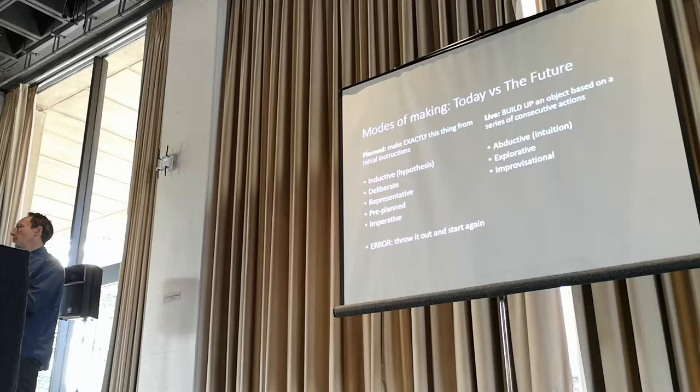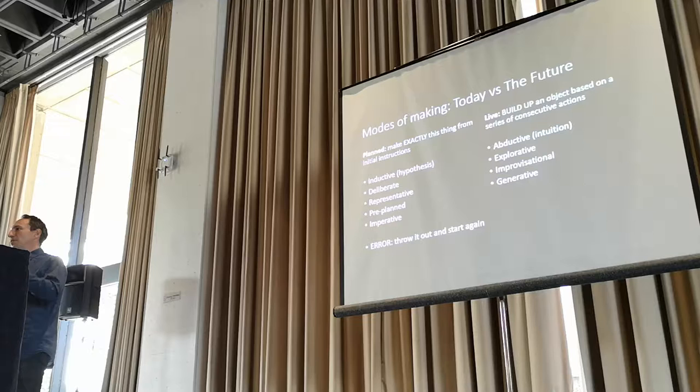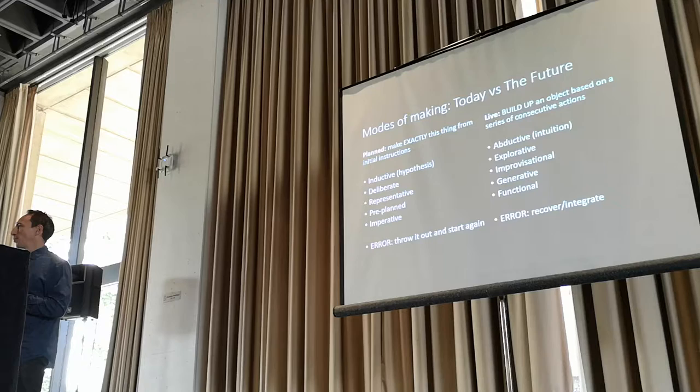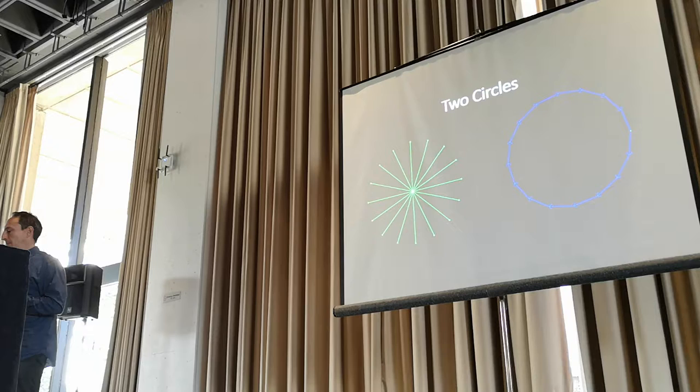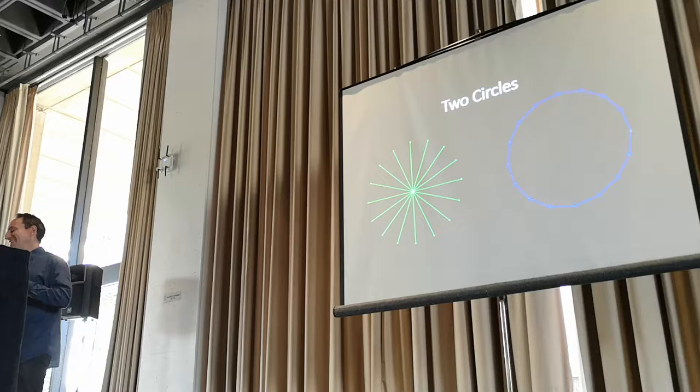It's a bit generative — you set up some rules, play out the system, and see what happens. It's also a bit functional. Errors are actually an interesting part of this process; they're expected and something you want, because you can integrate them into the final design — like your happy accidents. Every theory is wrong but some are useful, and that's how I'm thinking about that as an overall art theory.